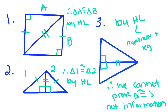We just learned all five ways to prove that triangles are congruent. In our next lesson, we're going to talk about special properties of isosceles triangles.